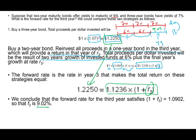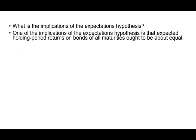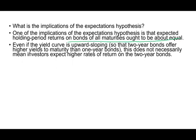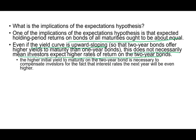We found that year three should be 9.02%. How? It's based on expectations: if Investment A earned 7% each year, Investment B in the third year should earn enough so that over a three-year period both investments earn the same amount. The implication is that expected holding period returns on bonds of all maturities should be about equal. Even if the yield curve is upward sloping and future rates are higher than current rates, this does not mean investors expect a higher rate of return on the longer bond.